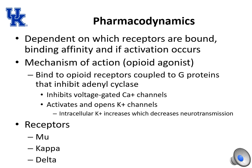The pharmacodynamics of a specific opioid depend on which receptors are bound, the binding affinity, and whether activation occurs. In general, the mechanism of action is as an agonist. An opioid binds to an opioid receptor coupled to G proteins, which then inhibit adenyl cyclase. This inhibits voltage-gated calcium channels but activates and opens potassium channels, leading to increased intracellular potassium and decreased neurotransmission. The three major receptors are mu, kappa, and delta receptors.